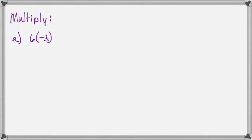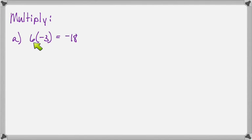Let's multiply six times negative three. Since the signs are different, that will be negative 18. It only matters that the signs are different — it doesn't matter which number was bigger or smaller, just that they're different.